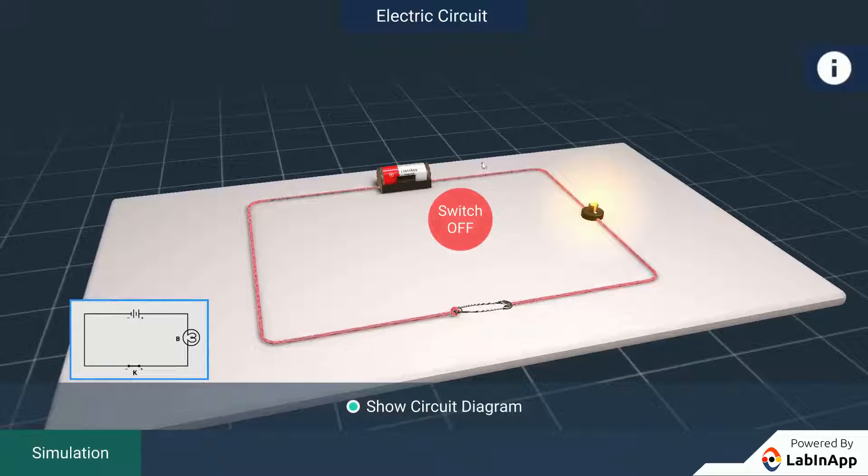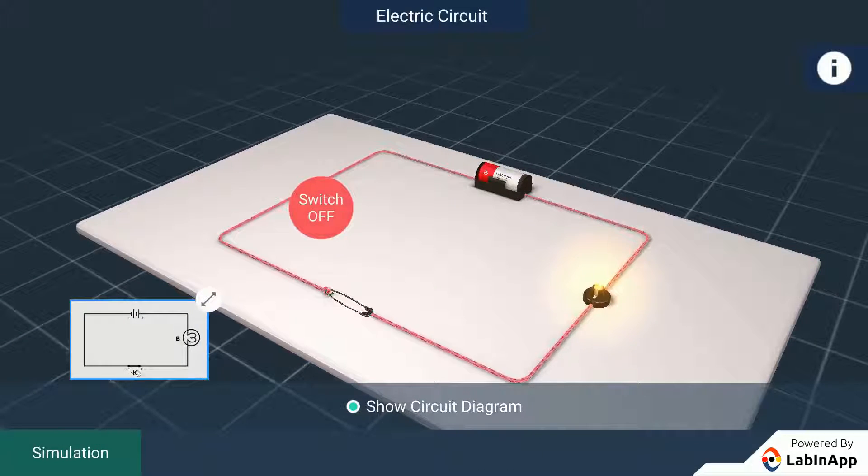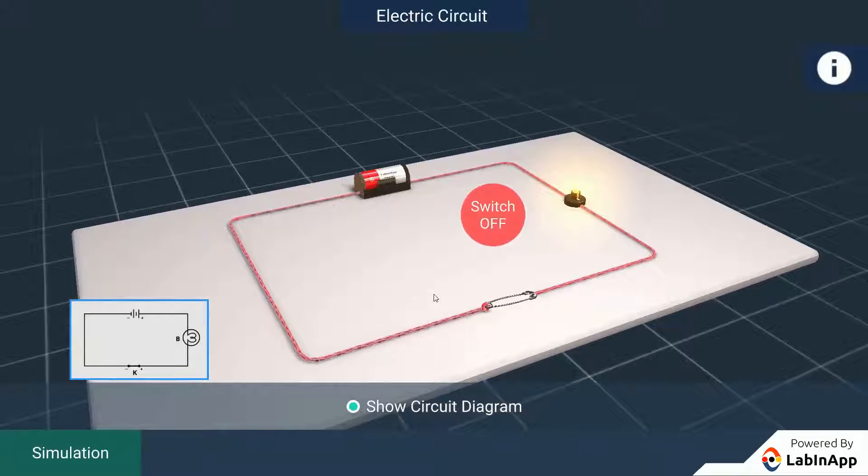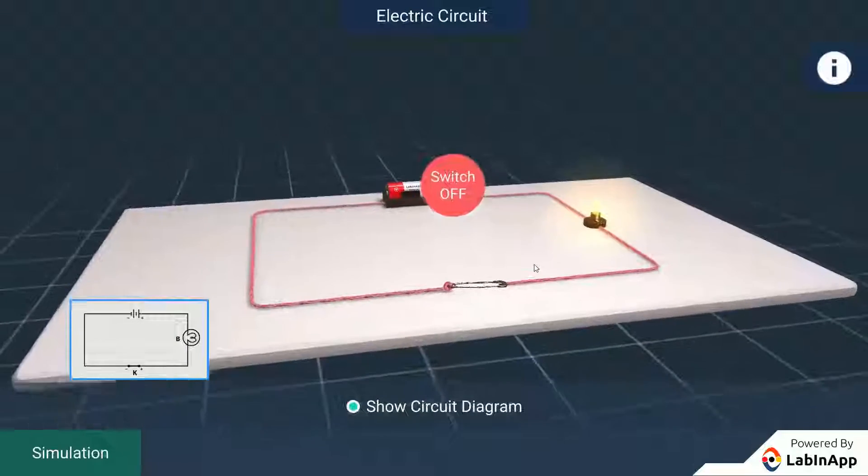The circuit diagram representing the switch on state of the circuit is as shown. We find that the bulb glows only when the switch is in on position and the electric circuit is closed.